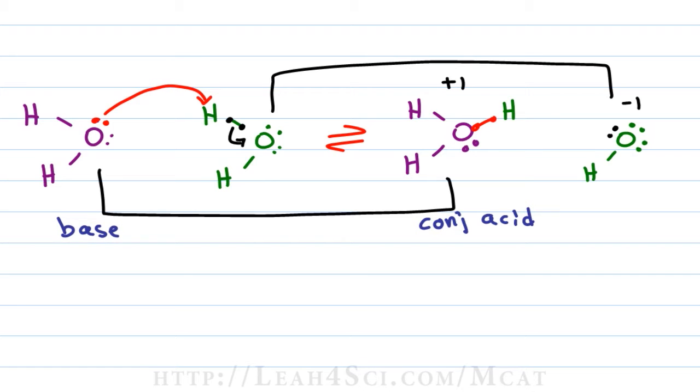When comparing the green species, the one on the left is neutral, the one on the right is negative. Neutral is more positive when compared to -1, and the more positive makes it the acid. The negative hydroxide is therefore going to be the conjugate base.